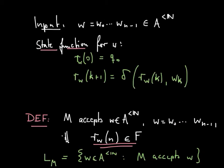Here is the formal definition of when a finite automaton M accepts a string w. We define a state function r_w where r_w(0) is the initial state q₀, and r_w(k+1) is the result of the transition function applied to the current state and the next bit of w. M accepts a string w of length n if after reading all n bits we result in an accepting state in F. L_M is the language accepted by M — the set of all strings accepted by M.